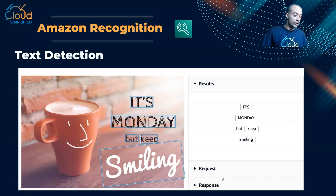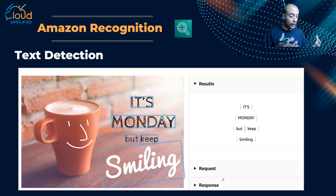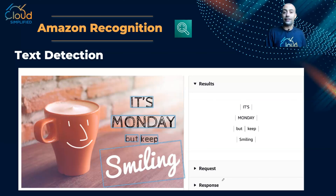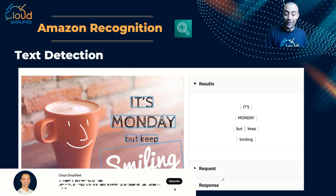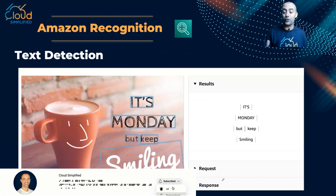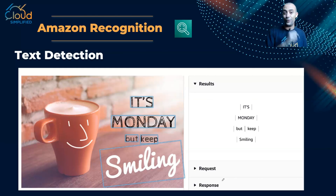Another example is text detection. I uploaded an image and Rekognition detected the text: 'It's Monday but keep smiling.' That very simply is Amazon Rekognition. If you have any questions please post them in the comments. Thank you so much.